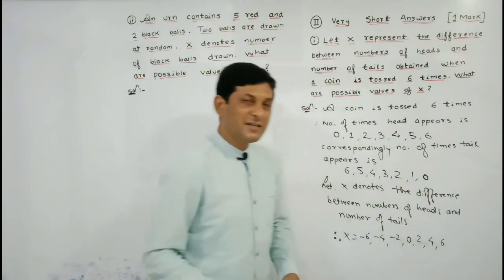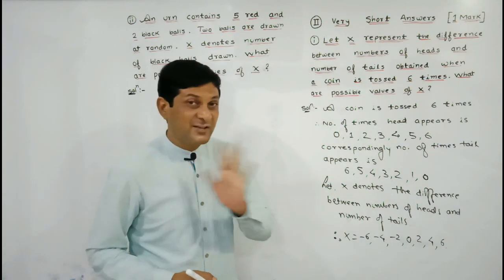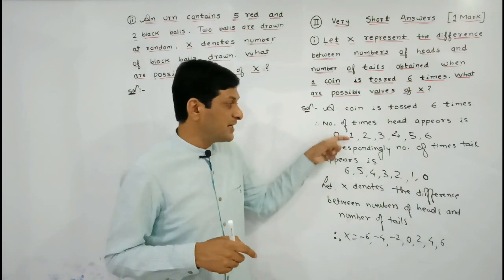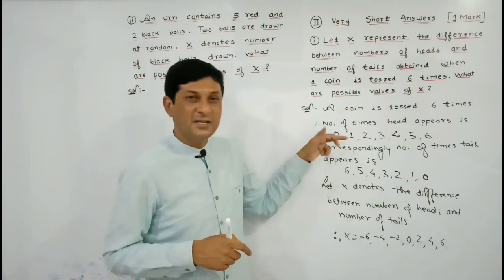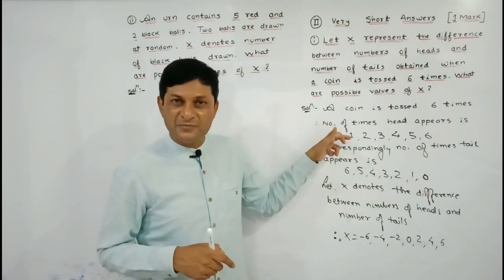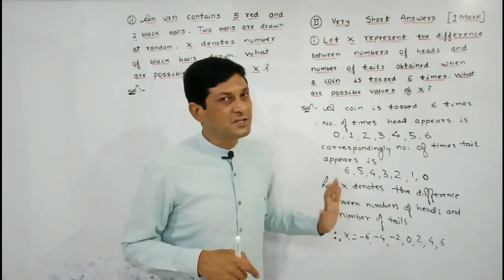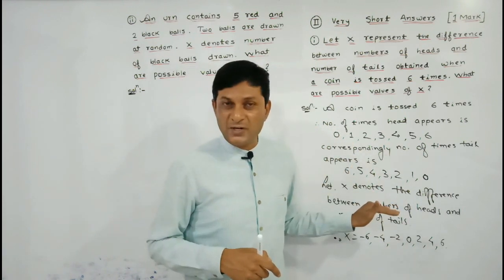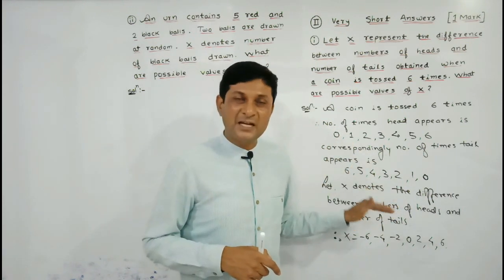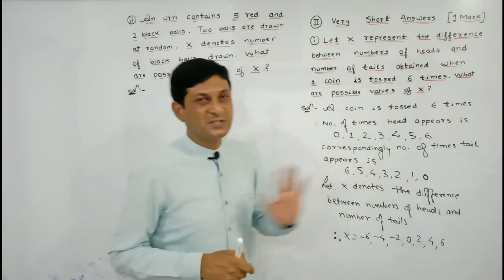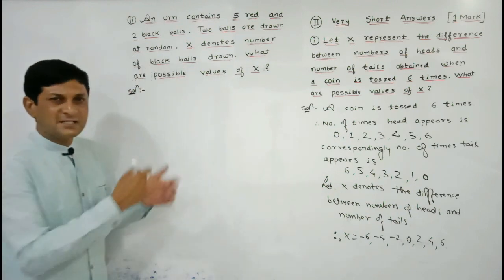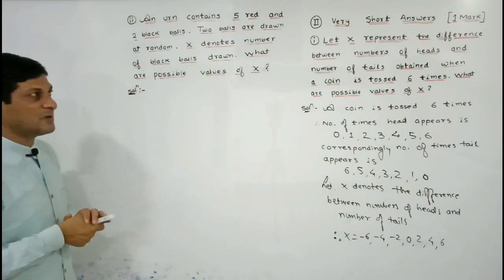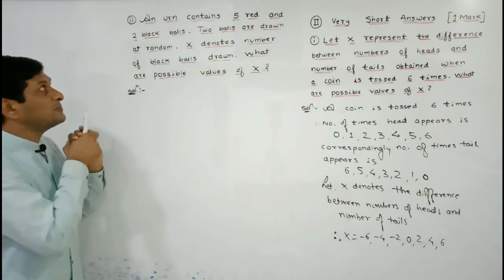In this way we have got 7 possible values of X, where X shows the difference between number of heads and number of tails. We simply took their difference and these are the required possible values of X.